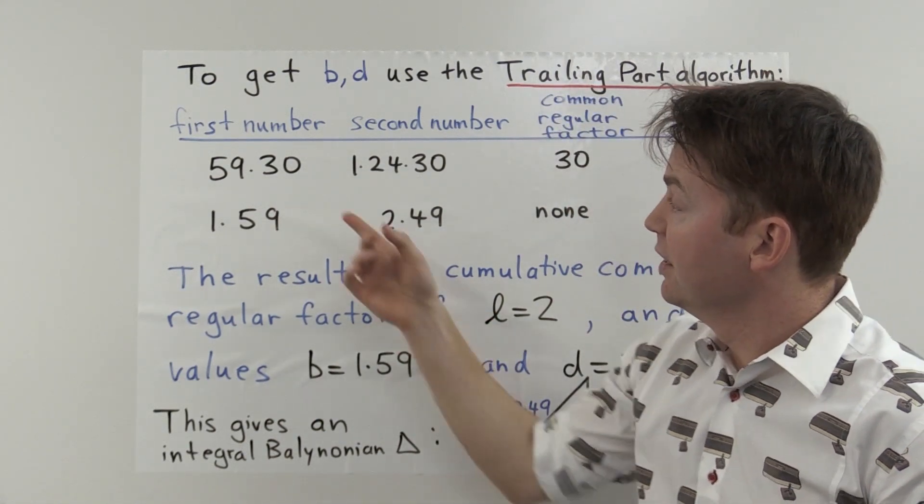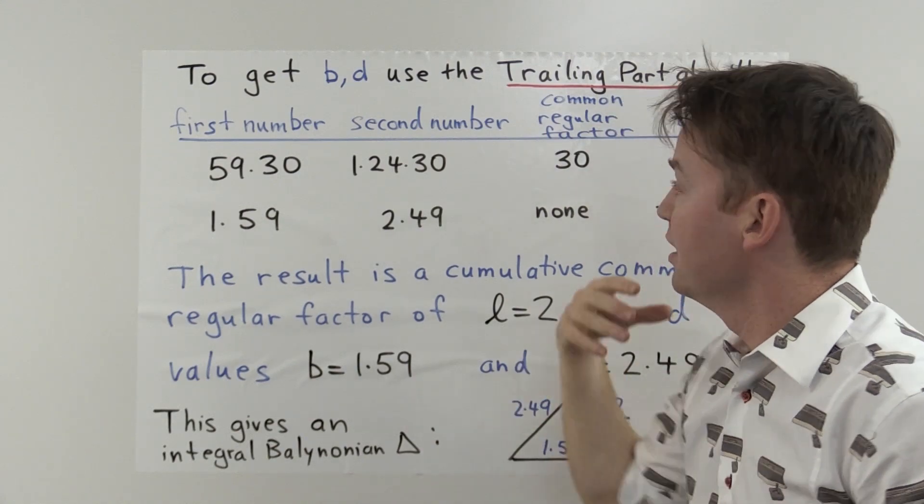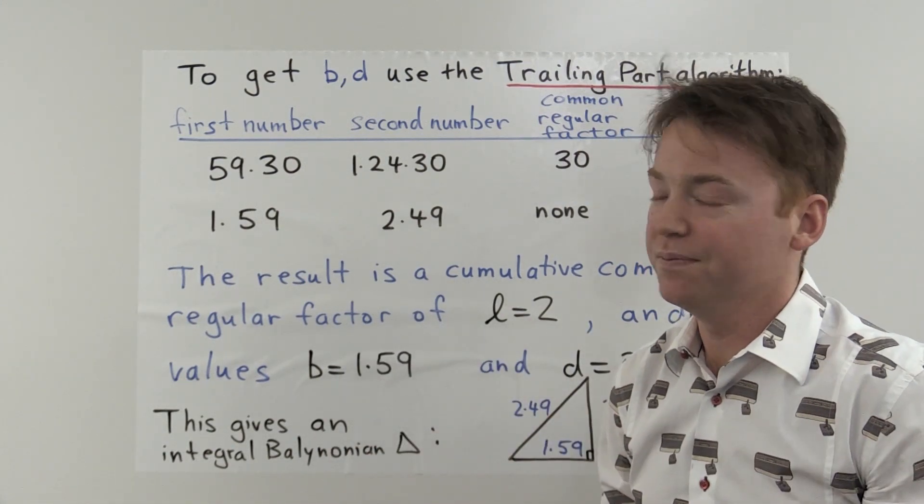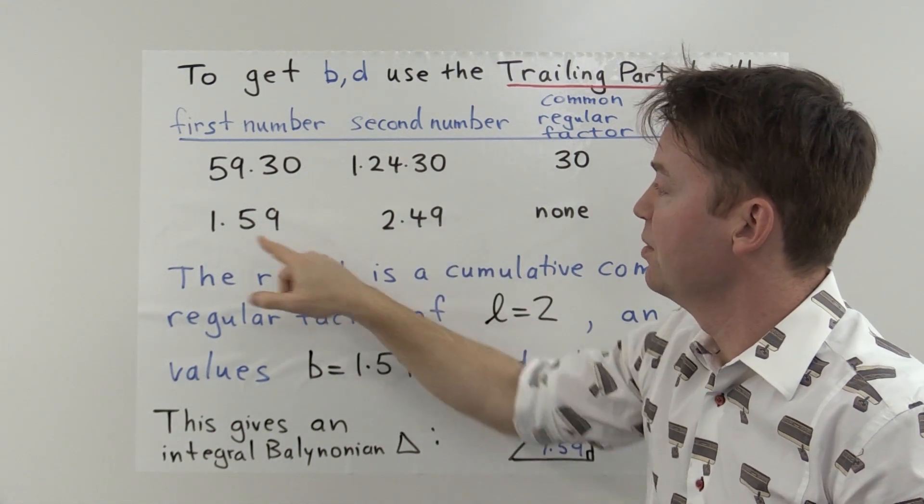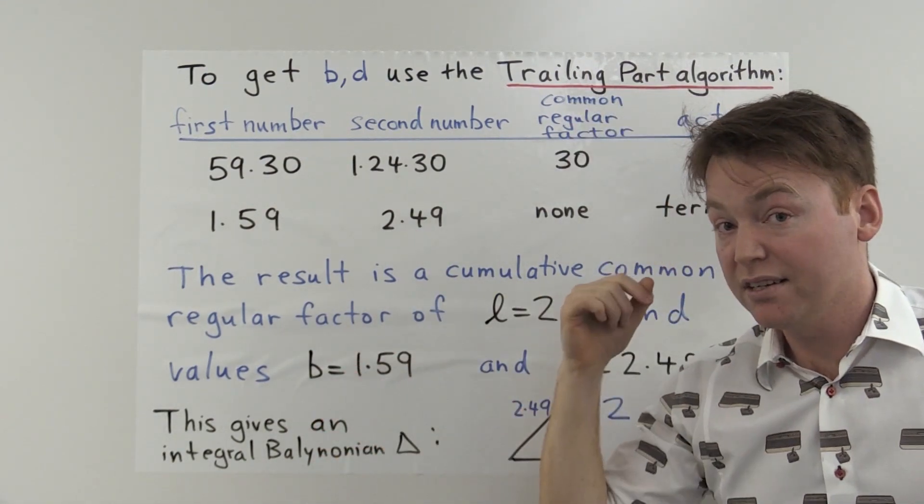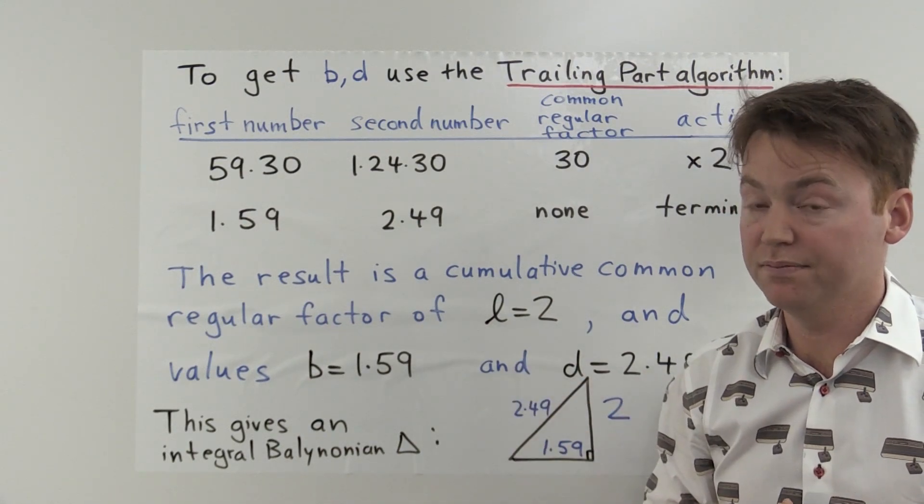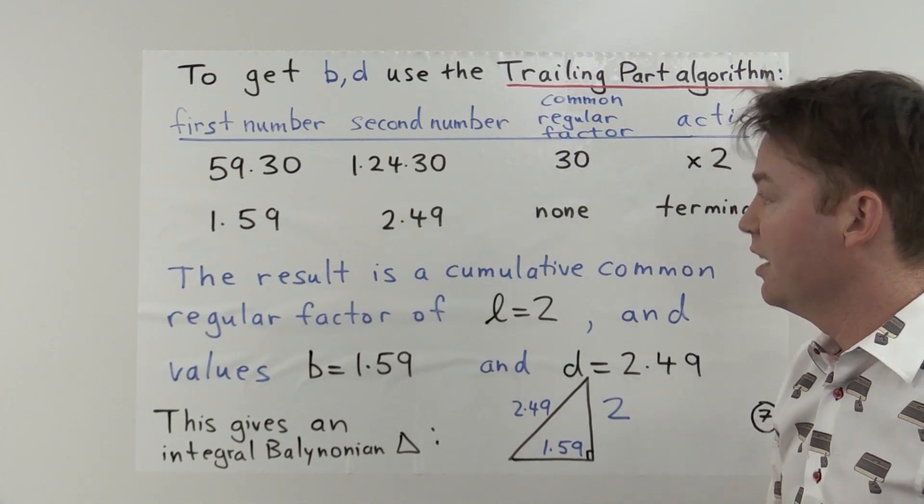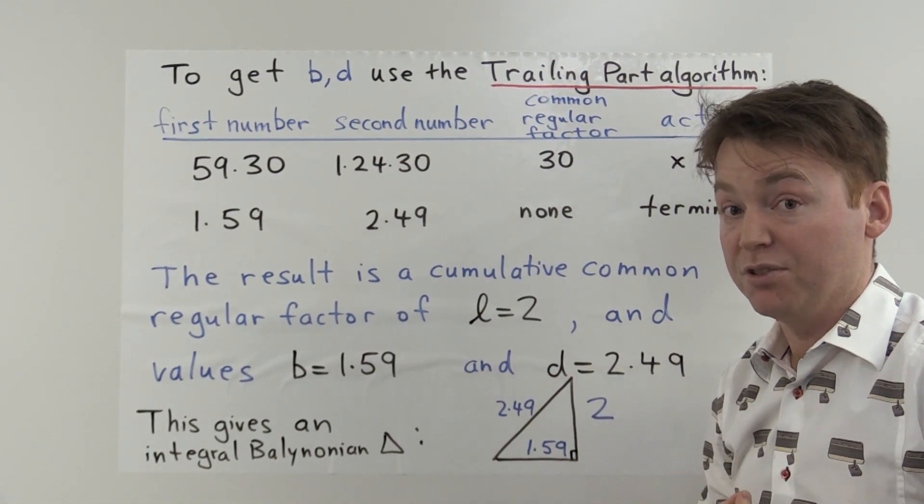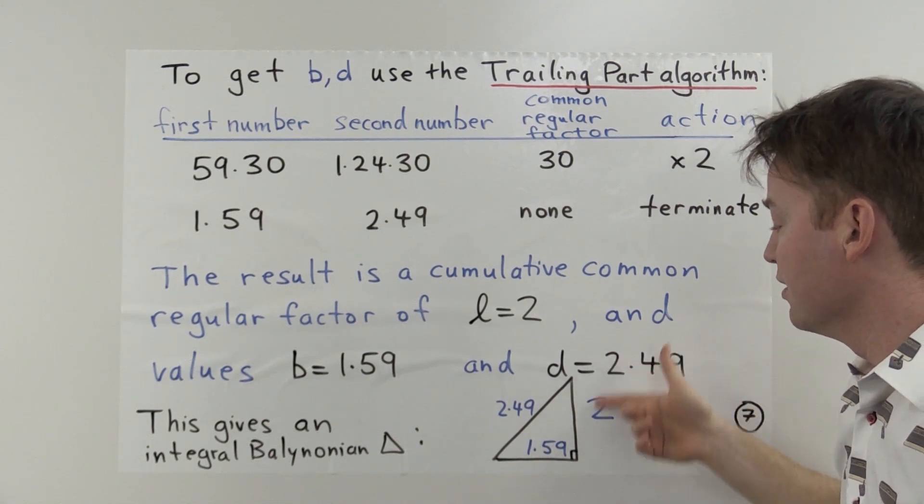From the numbers 59:30 and 1:24:30, the scribe immediately sees it's got a common factor in it. And in fact, the common regular factor is 30, which can be eliminated by multiplying by the reciprocal of 30, which is 2. So the scribe just multiplies this number by 2 and multiplies this number by 2, and they get 1:59 and 2:49. The scribe can see immediately from this number that there is no more common regular factor to be taken. So these are the numbers for beta and delta in their simplest form, if you like. So there's nothing left to be done. The procedure has finished and the scribe has obtained the simpler values for b and d, which describe now another right triangle, but this time with a d value of 2:49 and a b value of 1:59, and the length now is 2 instead of 1.